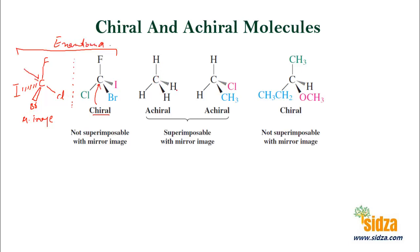Here you have a carbon with four similar groups — so this is methane, this is not chiral, this is an achiral molecule. An achiral molecule, if you look through the mirror, will be superimposable on its mirror image. Achiral molecules are superimposable with their mirror image. Here is another molecule — carbon with two hydrogen atoms and two different groups. Again, it is achiral, because for a molecule to be chiral it should have all four different groups attached. Here you have two hydrogen atoms — similar atoms — so it will be achiral. This molecule will be superimposable to its mirror image because achiral molecules are superimposable.